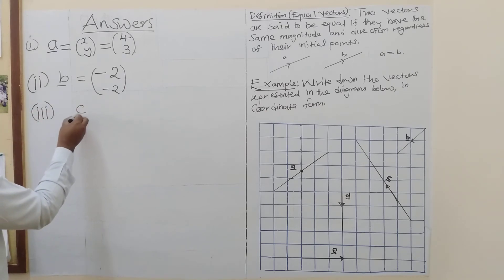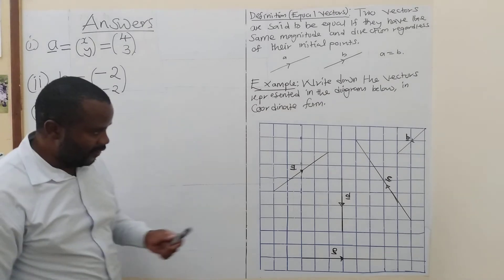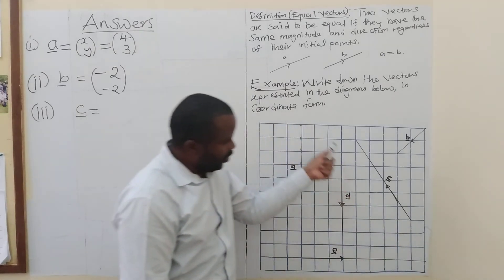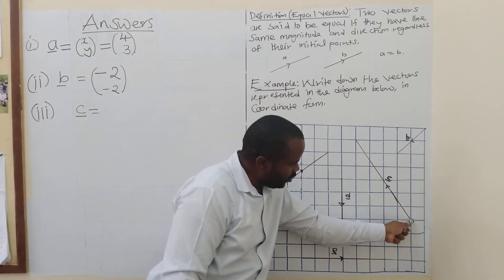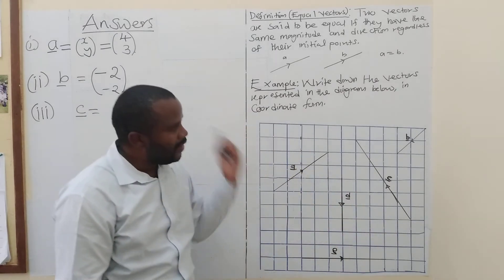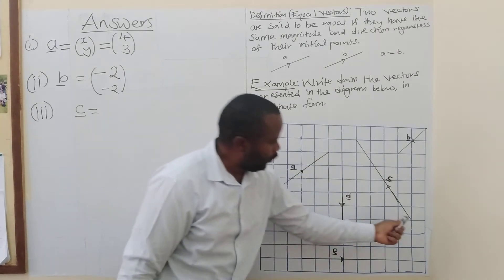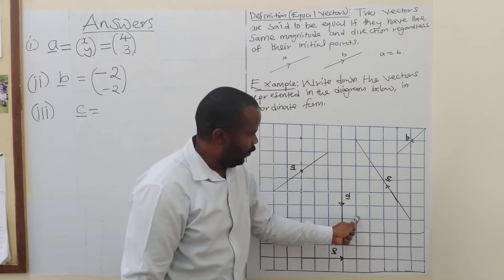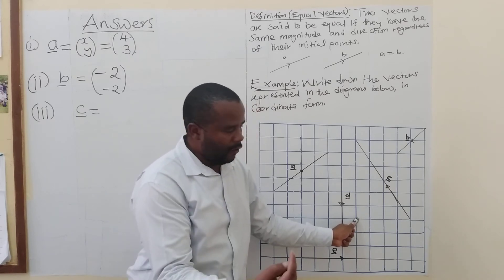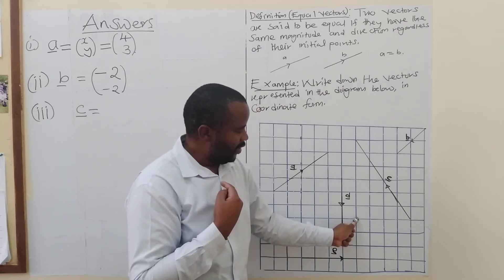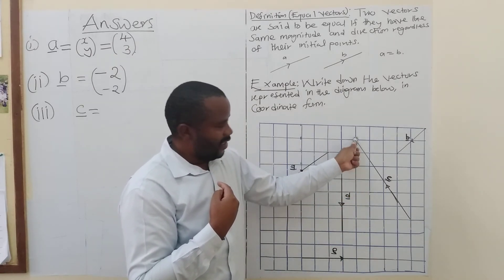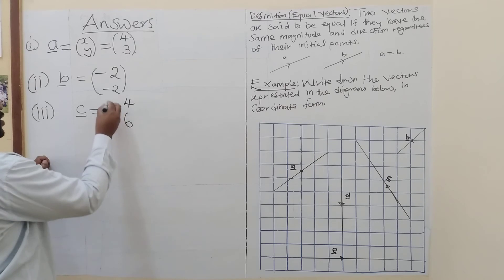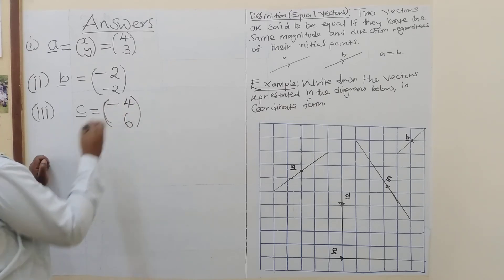For vector 'c', the arrow is going upwards but towards the left-hand side. Moving along the x-axis to the left: one, two, three, four — that's negative four. Then moving upward along the y-axis: one, two, three, four, five, six — that's positive six. So vector 'c' equals (−4, 6).